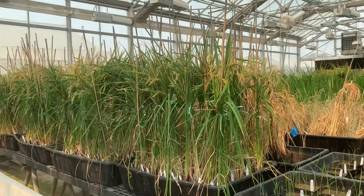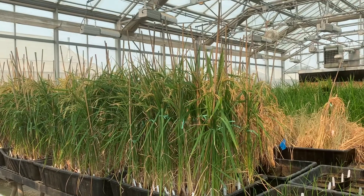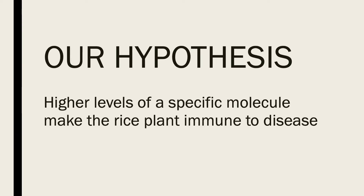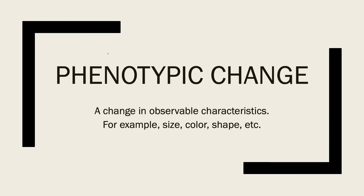The plants we are showing today are genetically engineered to have higher levels of a molecule that we hypothesize has a role in making the rice plant immune to disease. Modifying the amount of this molecule the plant makes is one way we can test this hypothesis. By doing this genetic transformation, we modify the rice to cause an observable phenotypic change in the plant that can be linked to the molecule's function in disease resistance.